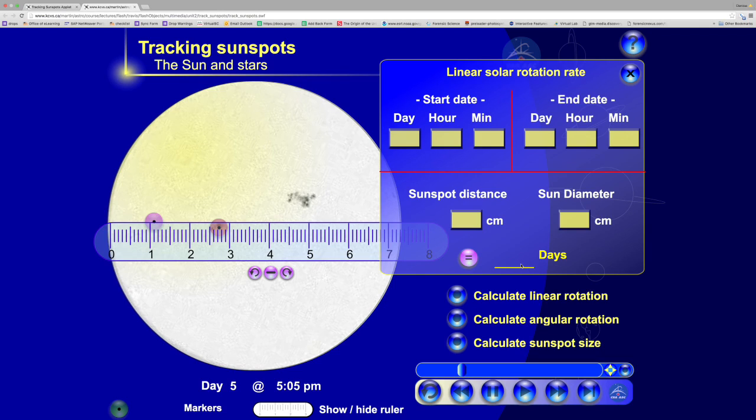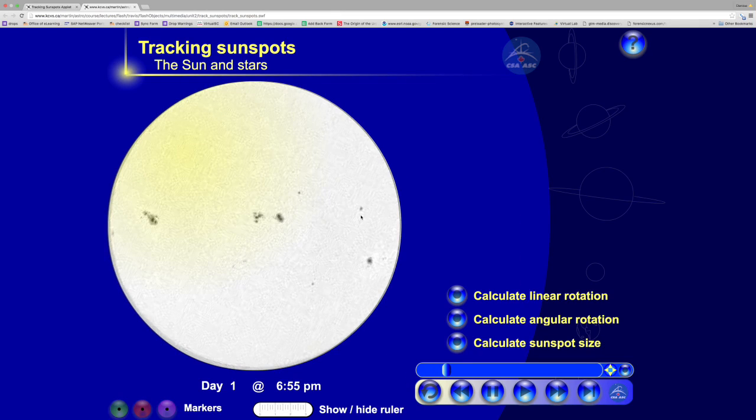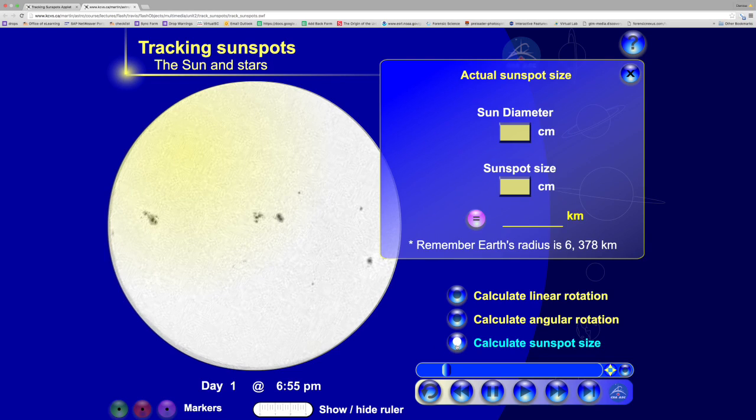Then we'll pick another sunspot - say, for example, this one - and we'll do the same procedure. Then we're also going to calculate sunspot size. That's quite simple.